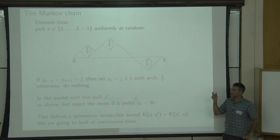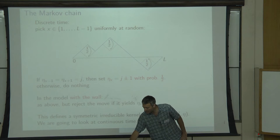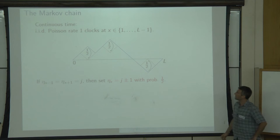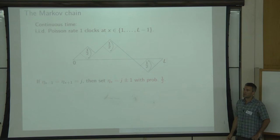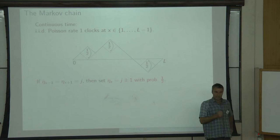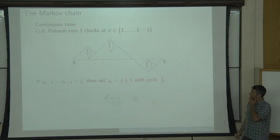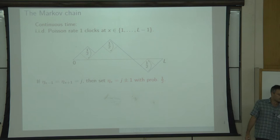Instead of the discrete time Markov chain, I want to use a continuous time Markov chain. A practical way to implement this is to assign to each site X inside your interval an independent Poisson clock with rate 1. At the arrival times of these Poisson processes, we update our configuration at X: the height of the polymer at X is updated by putting the value of the neighbors plus or minus 1 with probability one half, one half.